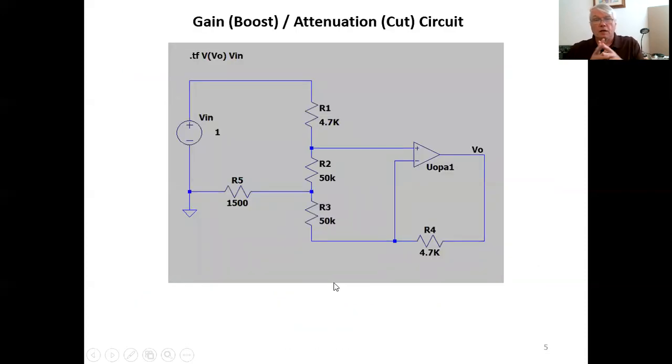So let's take a look at a basic gain that is boost or attenuation or cut circuit. And in this particular diagram, R1 is that input resistor. And R4 is a 4.7k feedback resistor for the op amp, which is built into the chip. R2 and R3 will represent the slider potentiometer. And R5 is a resistance from the wiper, that potentiometer back to ground.